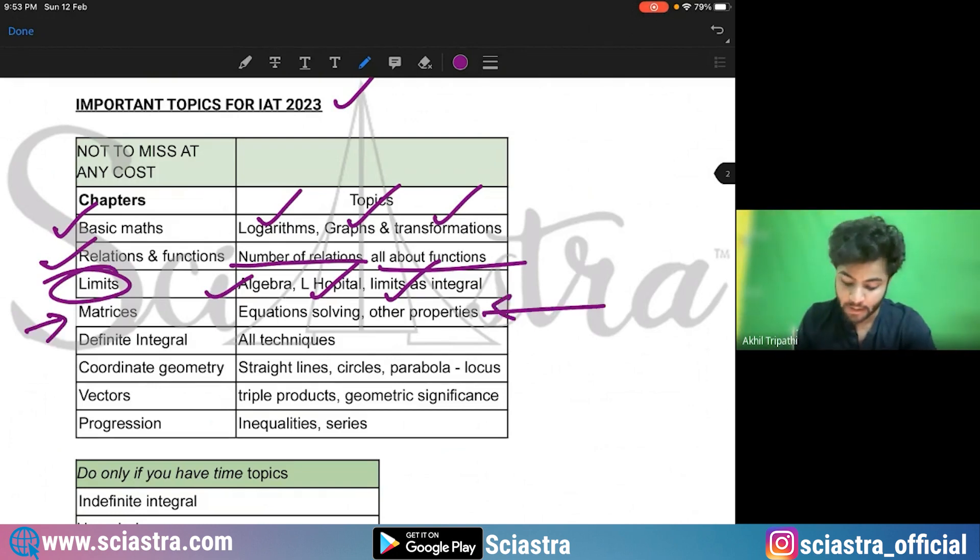Coming to matrices, so the equation, matrix as equation or a variable in a polynomial is very important. Solving the equations, having matrices and other properties of matrices. Then coming to definite integral. So basically the various techniques you use to solve the integral, definite integral, those are important.